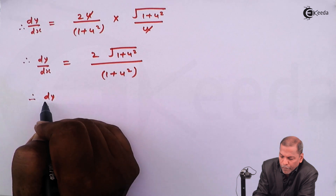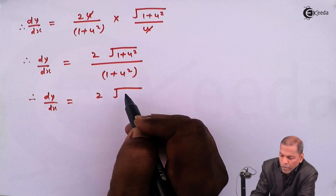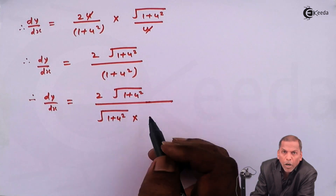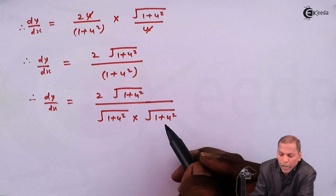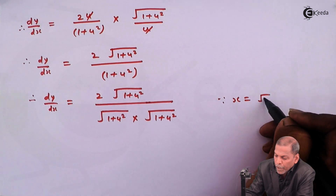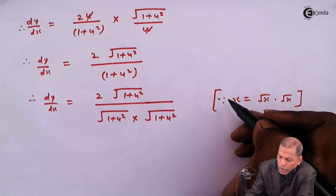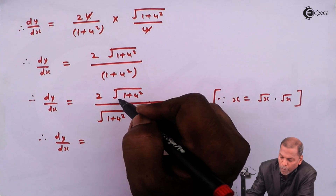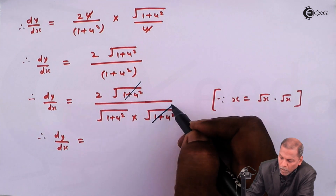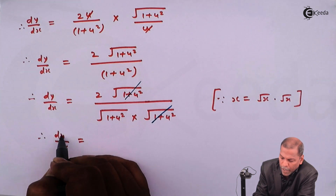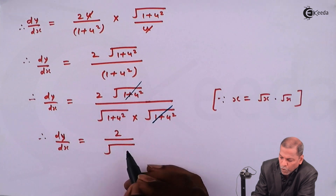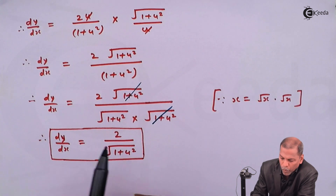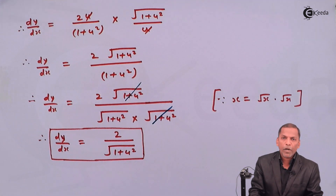Now 1 plus u squared can be written as root of 1 plus u squared into root of 1 plus u squared, since x can be written as root x into root x. Then cancelling a root of 1 plus u squared from numerator and denominator, we have dy by dx is equal to 2 upon root of 1 plus u squared. So this is the required solution for the given problem. Thank you.